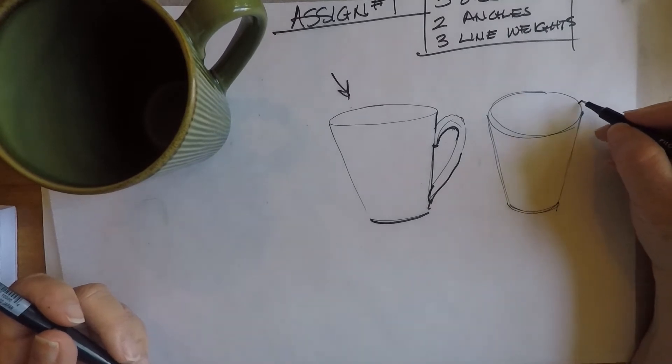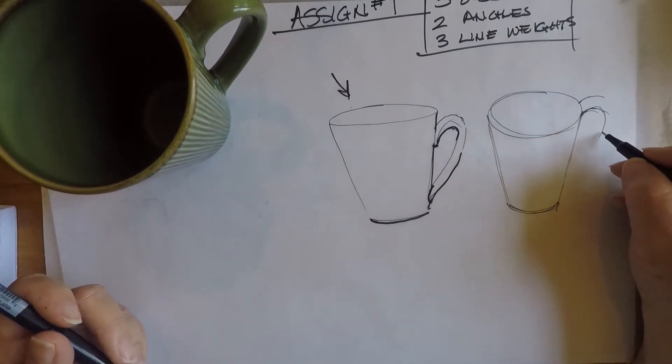And then I see just the top of the handle right here. So again, I'm trying to use a lighter line weight. Connect that curve down.